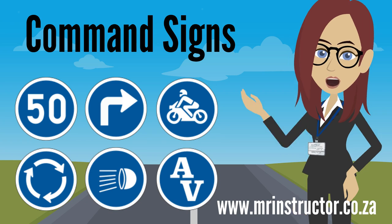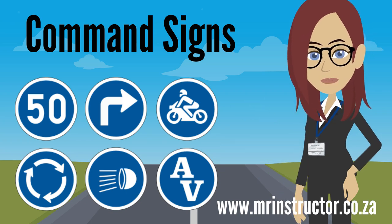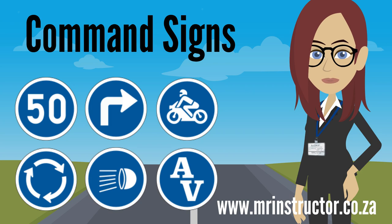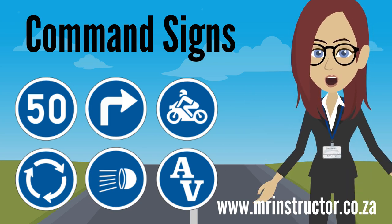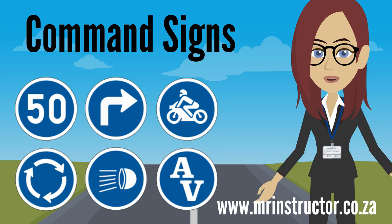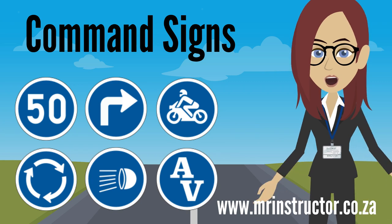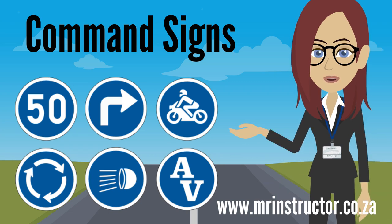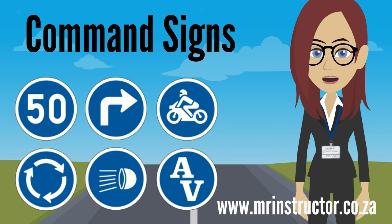To interpret a command sign, you should look at the numbers, letters, arrows, or symbols displayed on the sign. There are two types of command signs. The first type specifies an action that must be taken by all drivers. The second type indicates compulsory roadway or lane usage and specifies which class of road user must use a specific part of the road only.